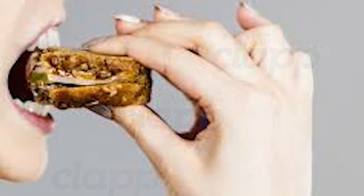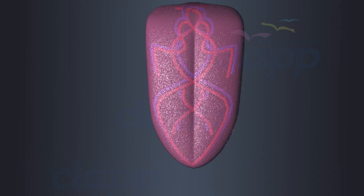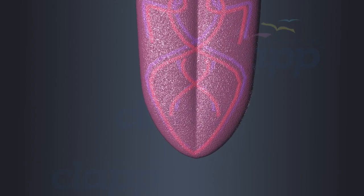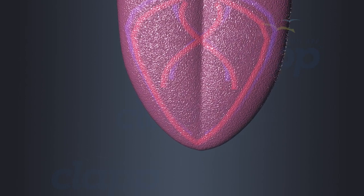Saliva helps in breaking down food and aids in the sense of taste. The tongue is richly supplied with blood vessels and nerve endings.